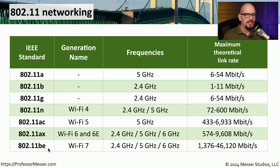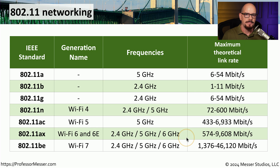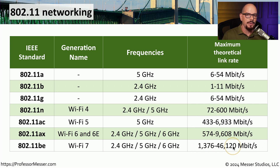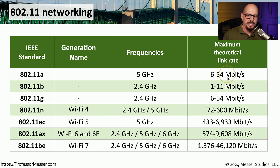You'll also notice there's a difference in the type of frequencies used for each of these standards. Most of these refer to the 2.4 gigahertz, the 5 gigahertz, and the 6 gigahertz ranges. There are a number of differences in how these wireless standards can be implemented — there might be a different number of antennas or radios — and that accounts for the differences in the theoretical link rates shown in the final column. Notice that as newer standards have been introduced, the overall link rate has also increased.